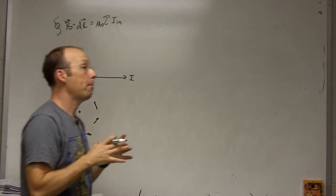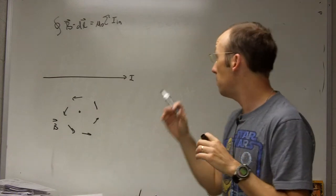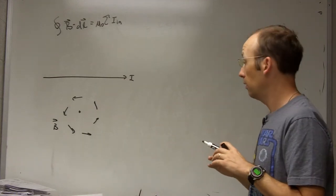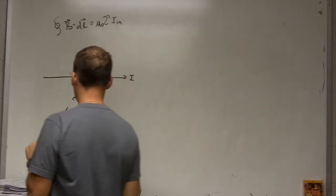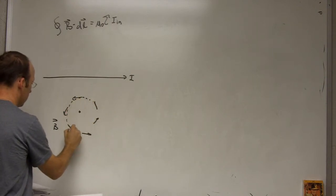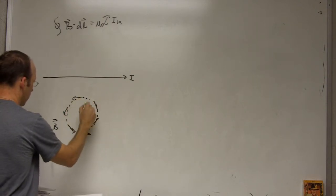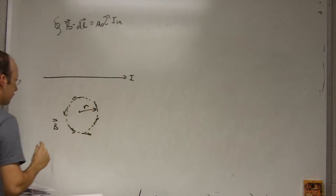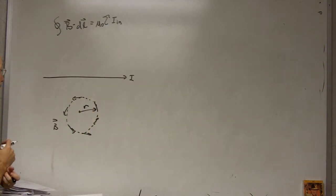So what kind of path can we choose to make that integral easy? Well, a circle seems like a likely choice. So if I have a circle like that of radius R, then I can do this integral. So let's do that.